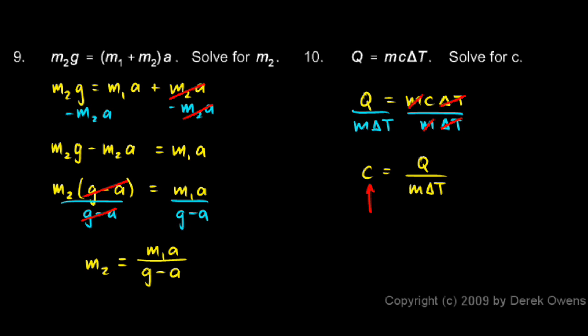This value c is called the specific heat capacity of a material. And we have found c in terms of the other variables: Q over mΔT.